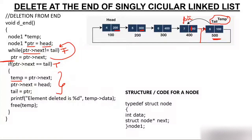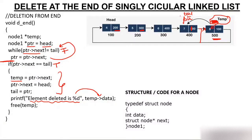Now I ask tail to move back — tail = PTR, and PTR is 400. So tail moves from the 500 node to the 400 node. The node to be deleted is held by temp. I print: element deleted is %d with temp->data, which is 8. So the output is: element deleted is 8. Finally, I use free(temp) to remove this node from memory. The 500 node gets deleted and vanishes from memory.